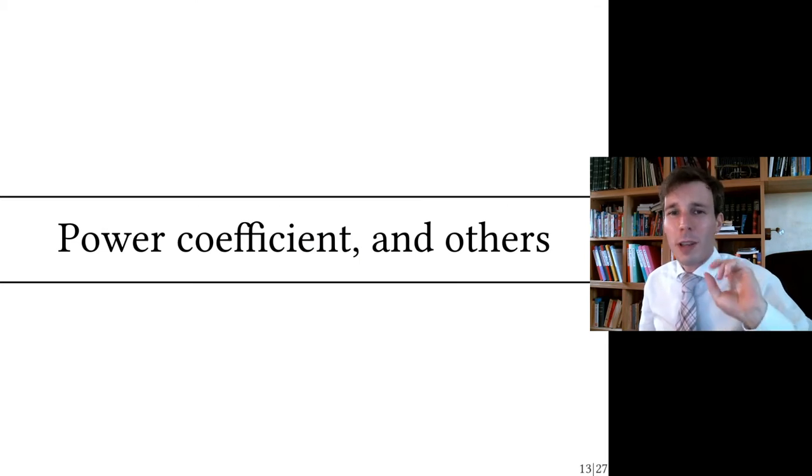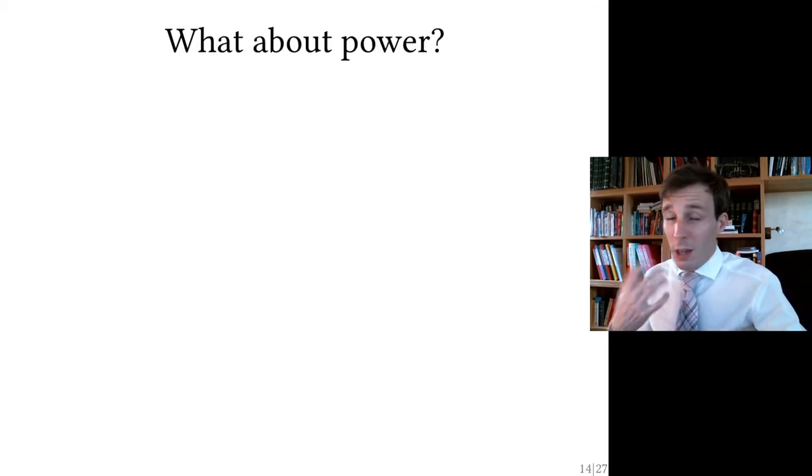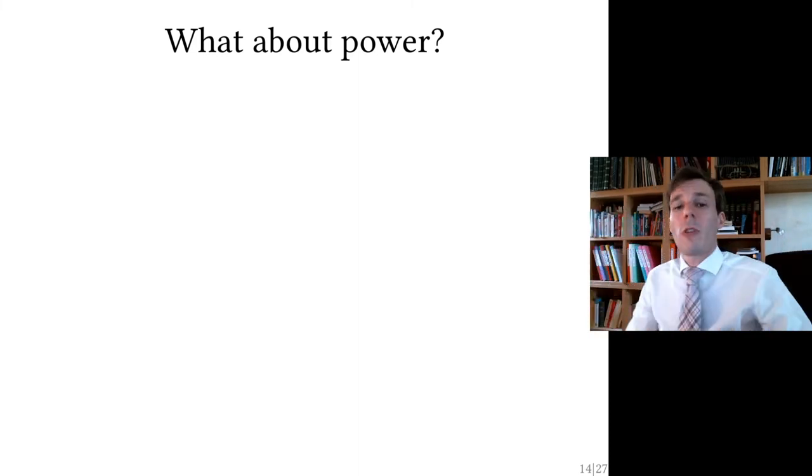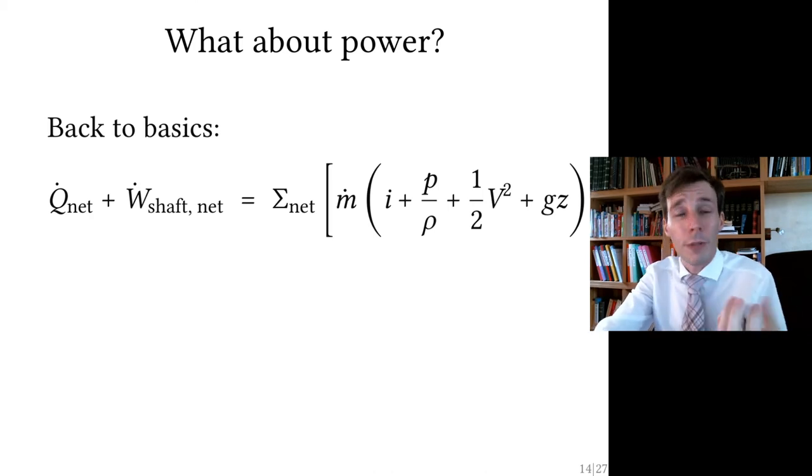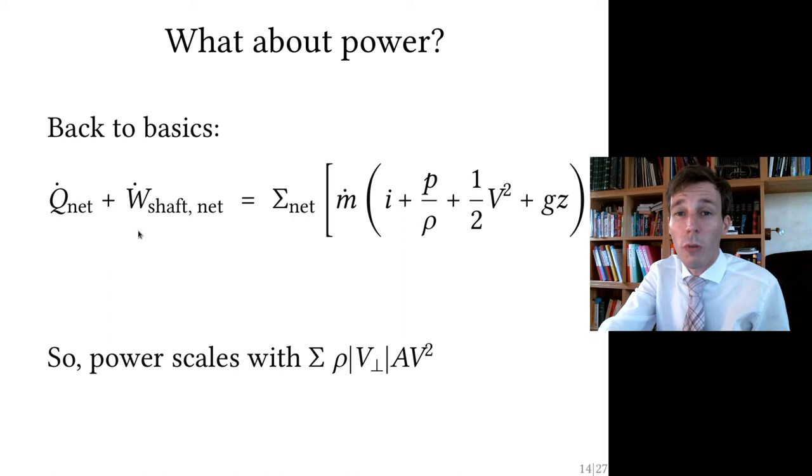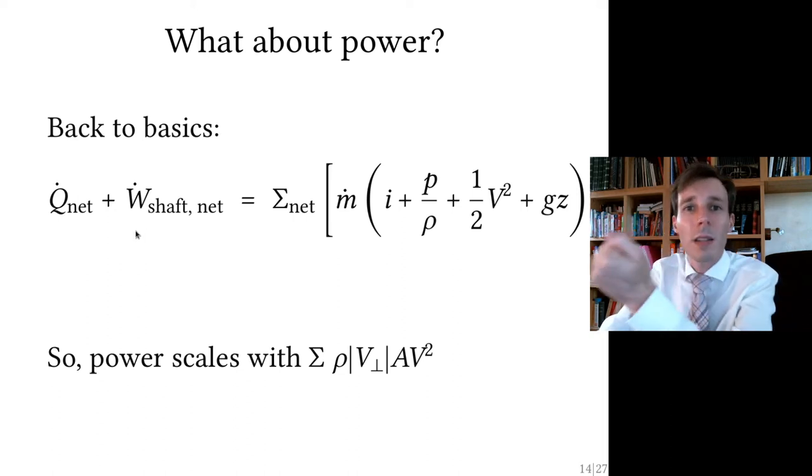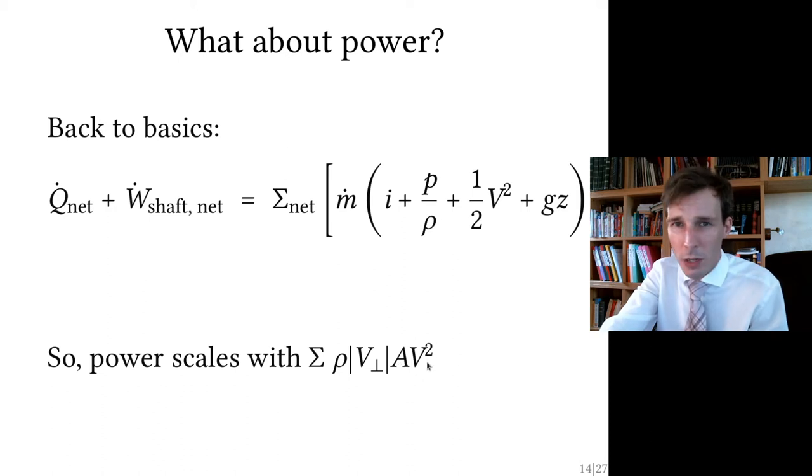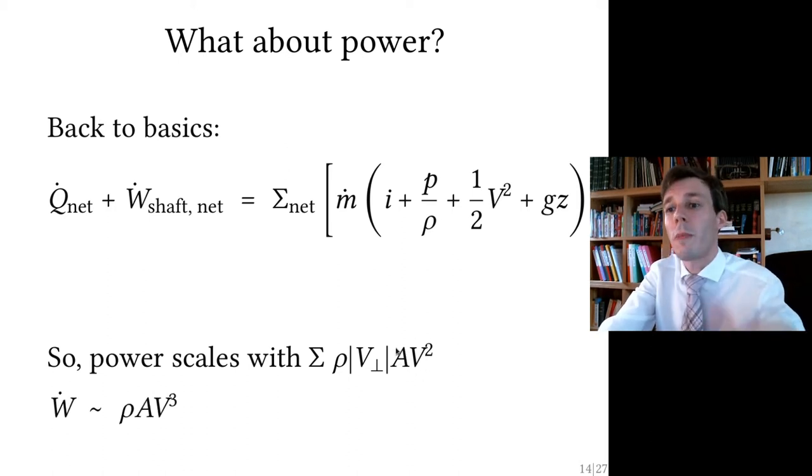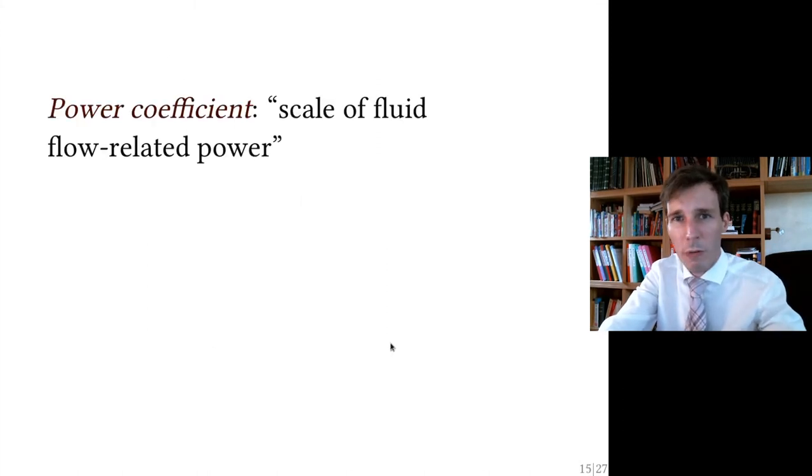There are other coefficients than the force coefficient. Here we're going to talk about the power coefficient. Again, if you go back to basics, you draw a control volume around your flow. You're going to find that the net power involved in the fluid flow is the sum, the net sum of incoming and outgoing mass flow multiplied by the sum of specific energies. And so in this mass flow, you're going to have velocity. This is going to be equal to rho vA. And in here, you have the square velocity. So it's fair enough to say that power over here, it grows together. It scales up and down together with rho vA and v squared. And so this is the basis, again, for coming up with the definition of the power coefficient, which is power divided by one half of rho s v cube.